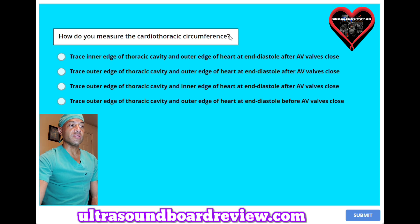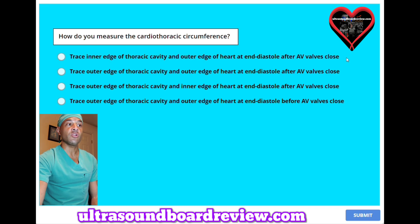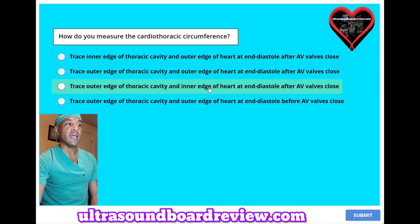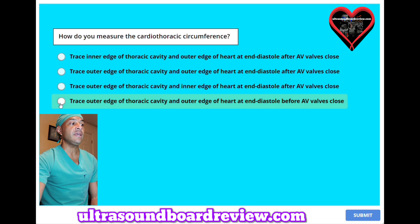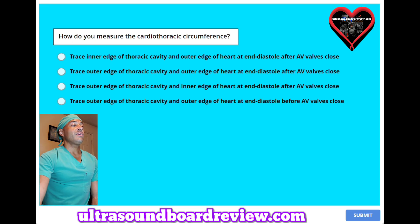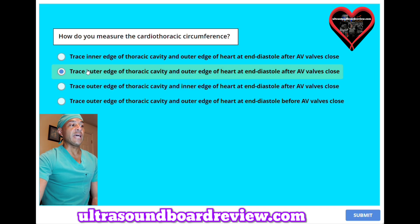How do you measure the cardiothoracic circumference? A, trace the inner edge of the thoracic cavity and outer edge of the heart at end diastole after AV valves close. Or D, trace the outer edge of the thoracic cavity and outer edge of the heart at end diastole after AV valves close. The answer is B: trace the outer edge of the thoracic cavity and outer edge of the heart at end diastole after AV valves close.